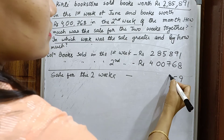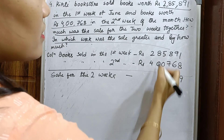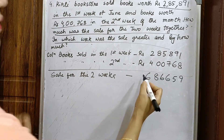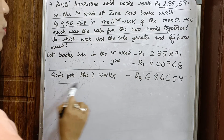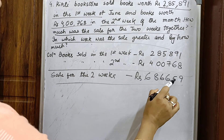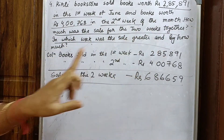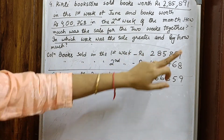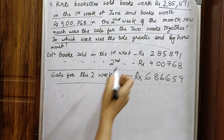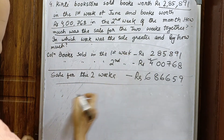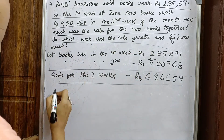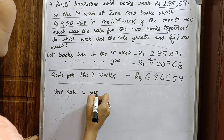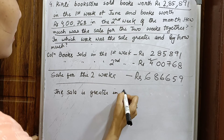Adding the two figures gives us 6,86,659. So in the two weeks, Kirti Bookstore sold books worth rupees 6,86,659. That's the answer to the first part. Now for the second part — in which week was the sale greater? The first week is two lakhs something, and the second week is four lakhs something, so clearly the second week is greater.